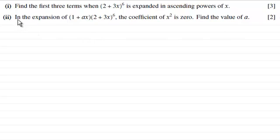And then in the second part it says in the expansion of (1 + ax) multiplied with (2 + 3x) to power 6, the coefficient of x squared is 0. Find the value of a for 2 marks.